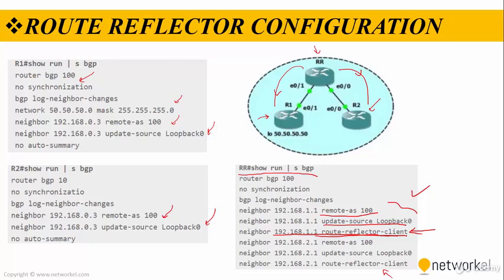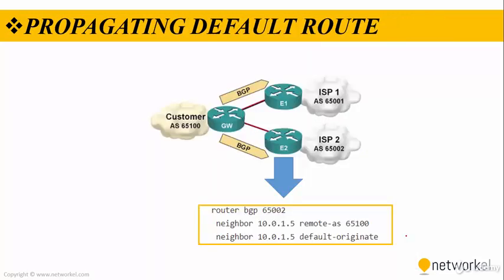On the client routers, we are just peering with the route reflector, and the route reflector peers with all other routers in the network using the route-reflector-client command. Finally, here is how we can propagate a default route in BGP — that's pretty straightforward. The command is simply neighbor default-originate.